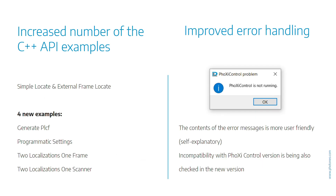We also thought about our customers that are using the API. If you are one of them, you can look forward to four new C++ examples that will help you while creating your own application. These examples may also come as inspiration for what localization is capable of doing.